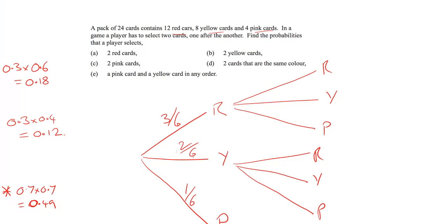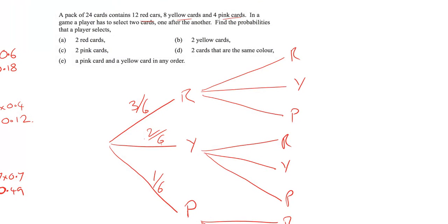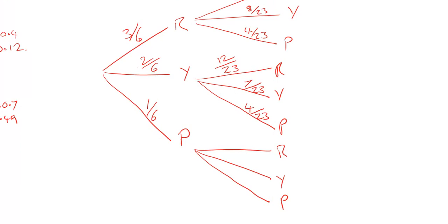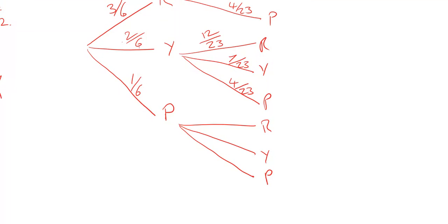Having picked one card, only 23 remain. If red was picked first: 11 reds, 8 yellows, and 4 pinks out of 23. If yellow was picked first: 12 reds, 7 yellows, and 4 pinks out of 23. If pink was picked first: 12 reds, 8 yellows, and 3 pinks out of 23.